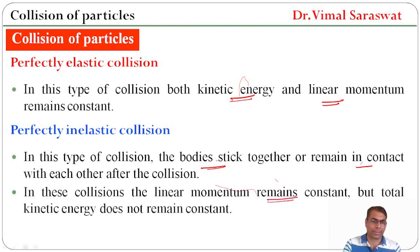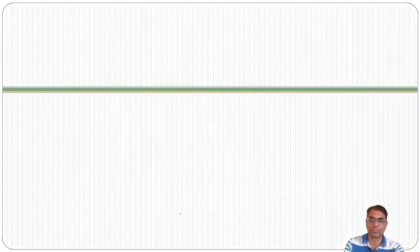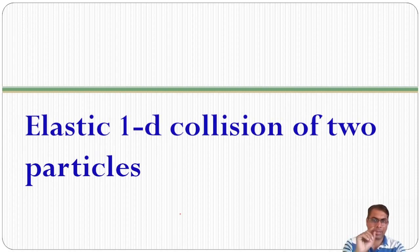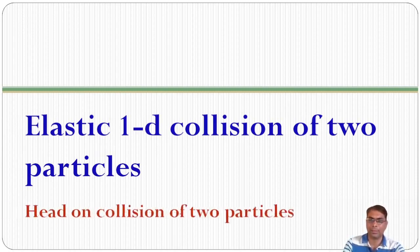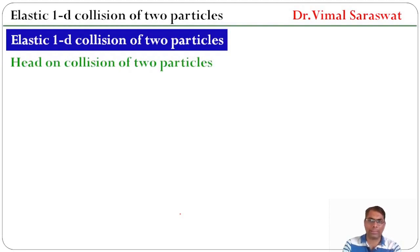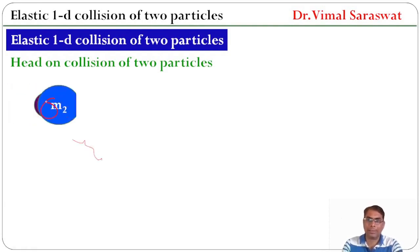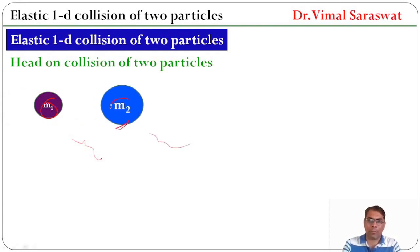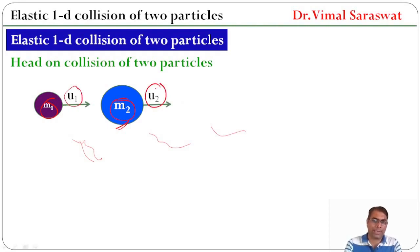In these collisions, the linear momentum remains constant but total kinetic energy does not remain constant. Now, elastic one-dimension collision of two particles, or head-on collision of two particles. Here we have a particle having mass M1 and another particle of mass M2. M1 is moving with velocity U1 and M2 is moving with velocity U2. Both are moving in the same direction.